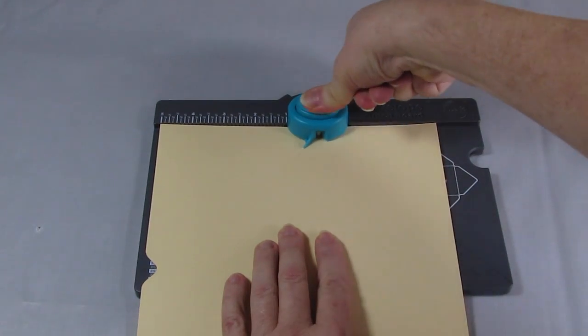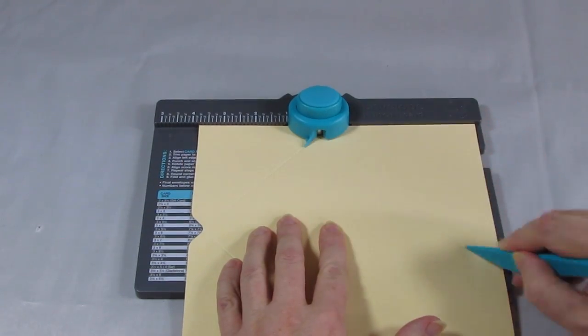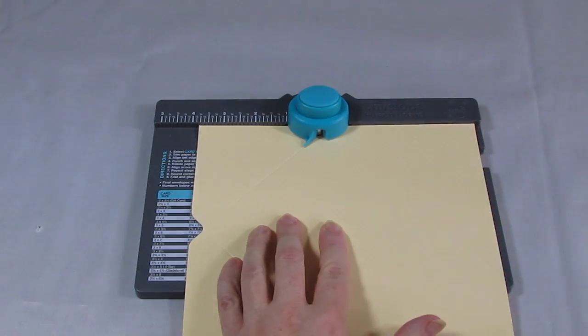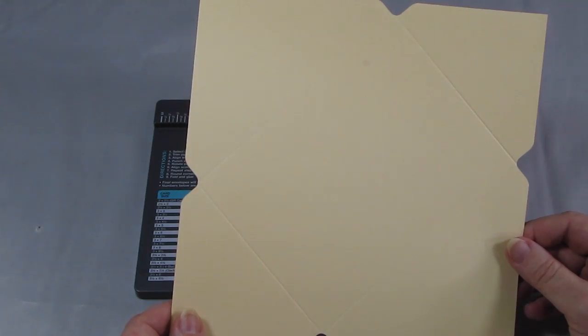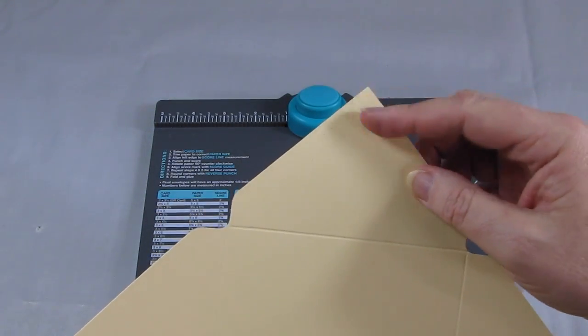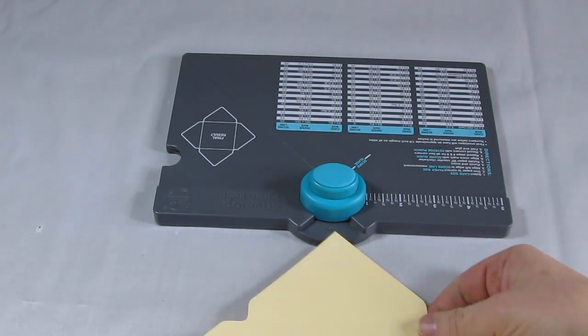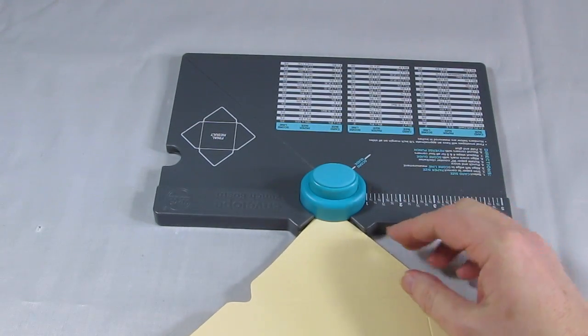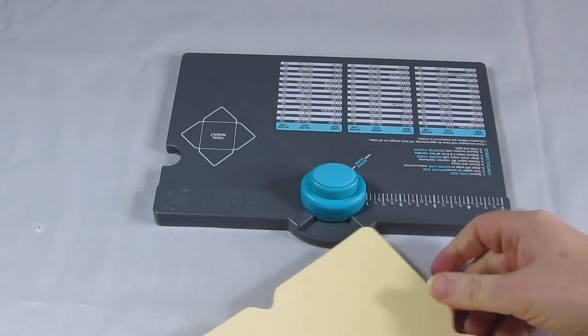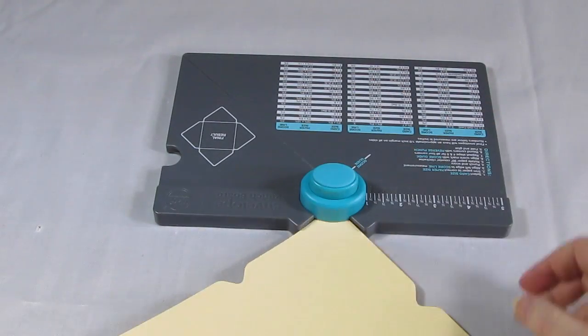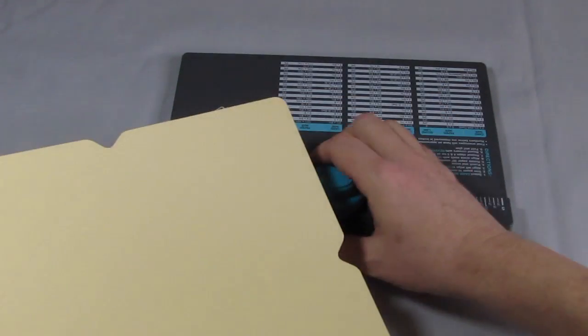Well there we have it all cut out, got our shape. But look at this nasty pointy edge, we want to round that off to make it look like a real envelope. So turn the board around, pop the edge in and just punch and round those corners as well.